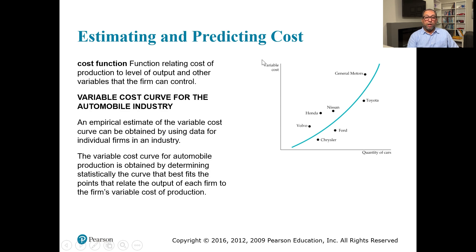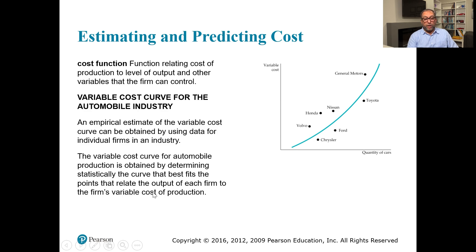Estimating and predicting cost involves cost functions — functions relating cost of production to the level of output and other variables firms can control. Using data for individual firms in an industry, we can run regression analysis to obtain an equation where coefficients represent the relationship between cost elements and output. For automobile production, the variable cost curve is obtained by statistically fitting the curve that best relates output to each firm's production cost.